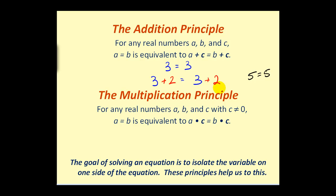The next principle is the multiplication principle. Again for any real numbers a, b, and c where c is not equal to 0, a equals b is equivalent to a times c equals b times c. So if we start with the same idea where we know 3 is equal to 3 and then we multiply both sides of the equation by the same value, we can see it's still a true statement: 6 is equal to 6.